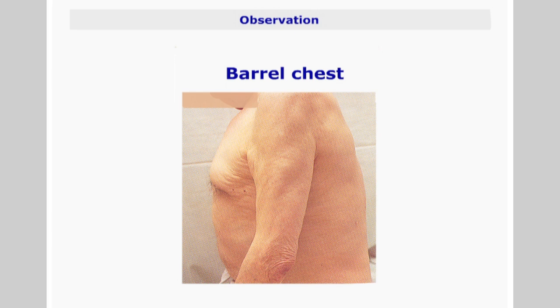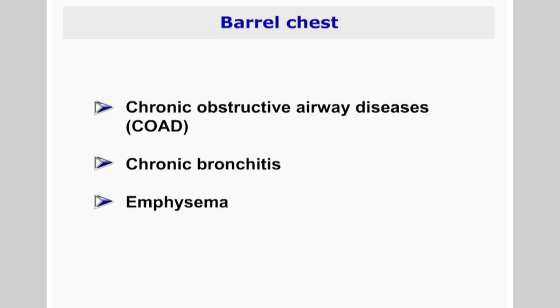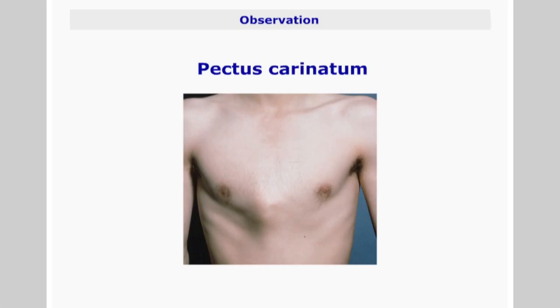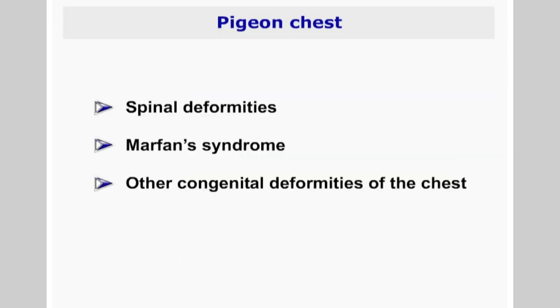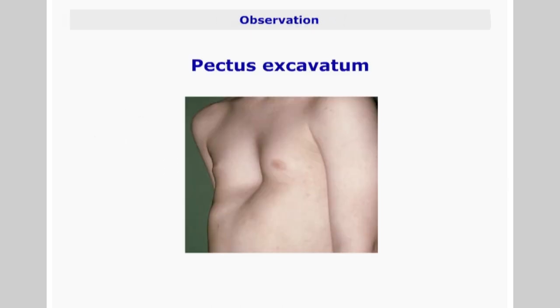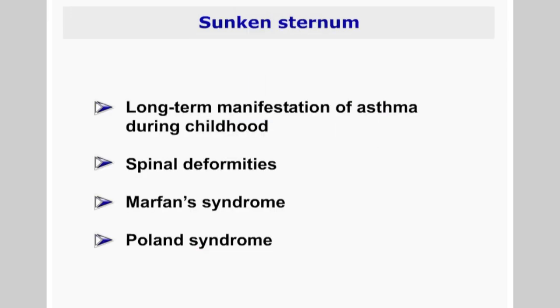A barrel chest deformity is caused by chronic obstructive airway diseases like chronic bronchitis and emphysema, causing increased anteroposterior diameter. Pectus carinatum, or pigeon chest deformity, is often associated with spinal deformities, Marfan's syndrome, or other congenital deformities of the chest. Pectus excavatum, or sunken sternum, may be a long-term manifestation of asthma during childhood, and is also associated with spinal deformities, frequently seen in patients with Marfan's and Poland syndromes.